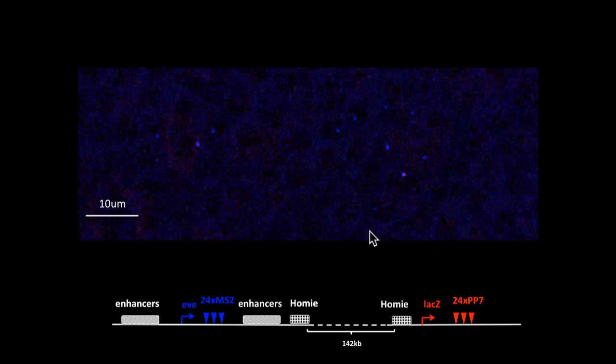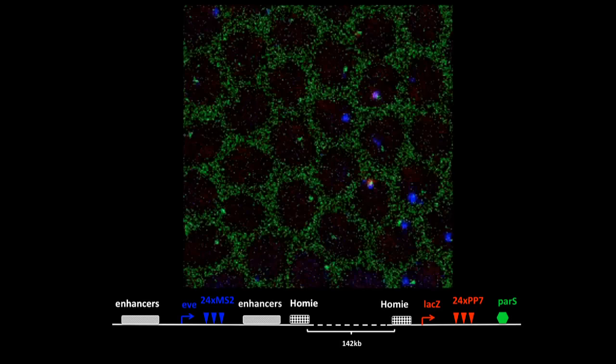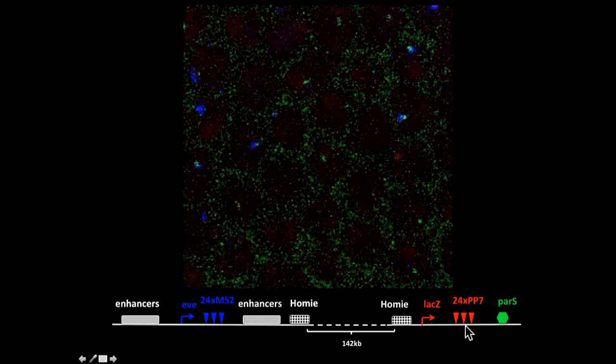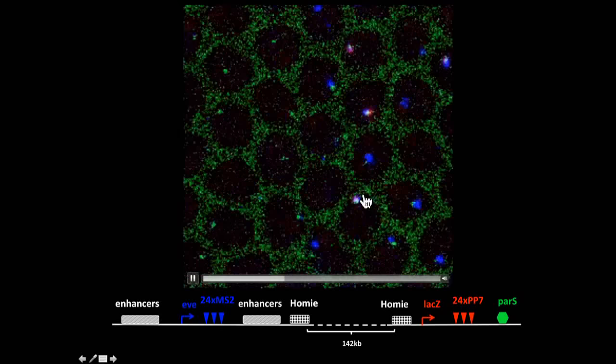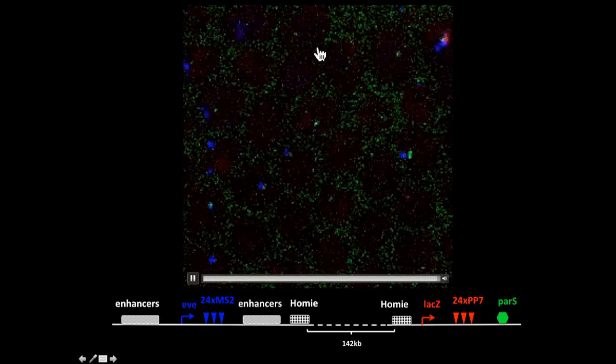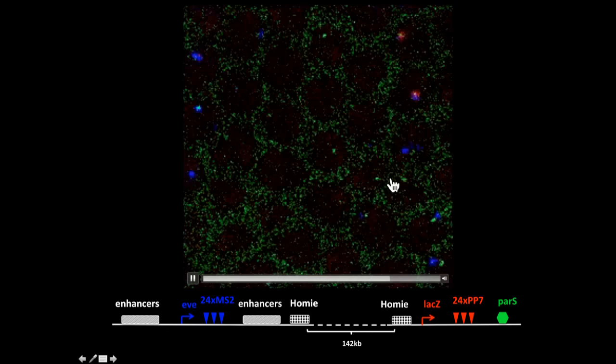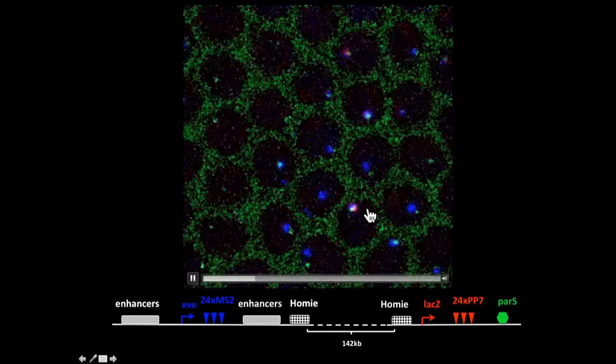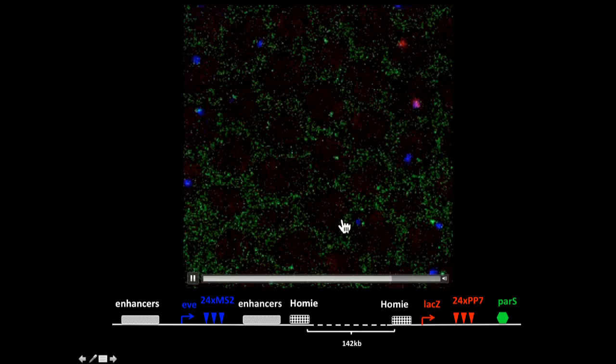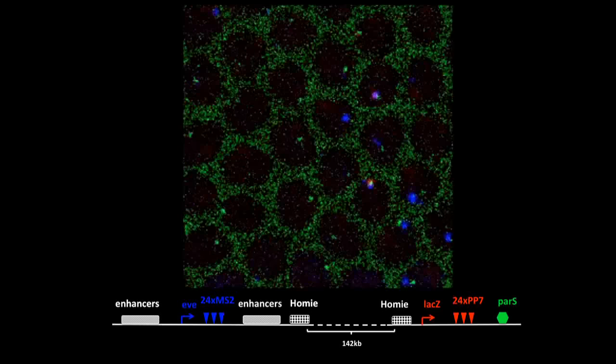That's why we introduced the third marker, which is green here. We borrowed the ParABS system from bacterium. So basically we can light up this piece of DNA, and this is transcription independent. In each nucleus you see here, there's a green spot. And then things become very interesting and clear. For example, in this one, you see the red is activated—the transgene is activated. Then the blue and green, they overlap. But where you see blue and green are clearly separated, you never see red. So it seems like the overlapping of green and blue is necessary for the activation of red.